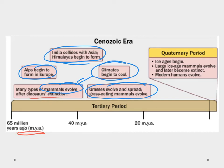In the quaternary period, we have ice ages going on. We have these large ice age mammals — the giant sloths, the woolly mammoths, the mastodons, things like that. They thrived, they evolved, and then they went extinct, and we see modern humans come to the scene.